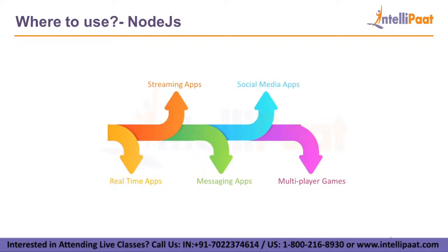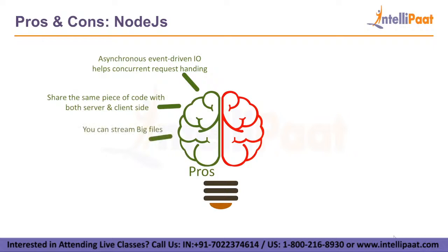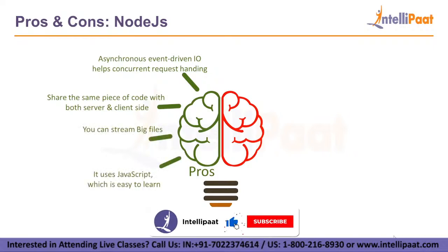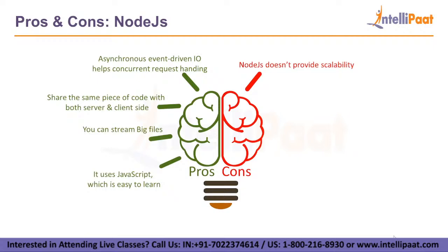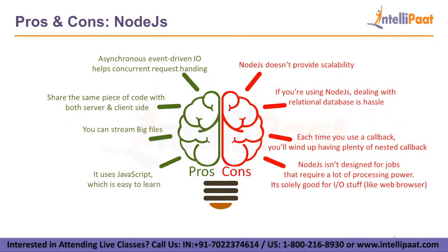Pros and cons of Node.js. Pros: asynchronous event-driven input-output which helps with concurrent request handling; you can share the same piece of code with both server and client side; you can stream big files; and it uses JavaScript which makes it easy to learn. Cons: Node.js doesn't provide scalability; dealing with relational databases is a hassle; each time you use a callback, you will end up with plenty of nested callbacks; and Node.js is not designed for jobs that require a lot of processing power — it's solely good for input-output stuff like web servers.